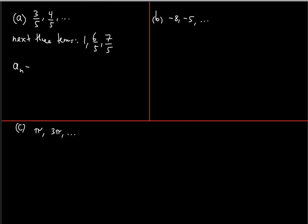Now, what is the formula for the nth term? The denominator is always five, so we write a five there. The numerator starts from three for the first term, and the common difference is always one — one times n gives n, but the first term is three, not one, so we need to add two.